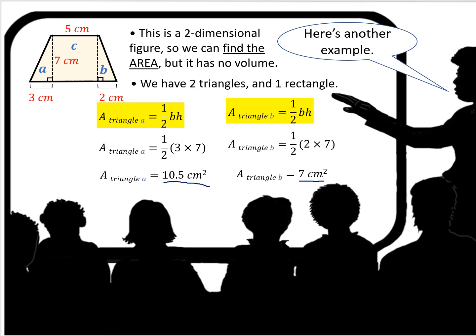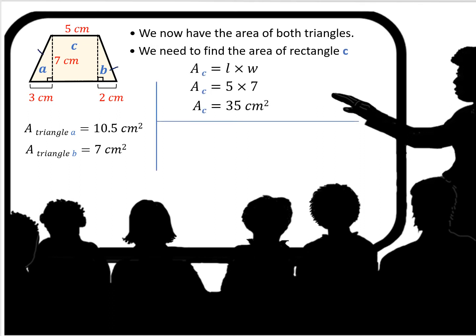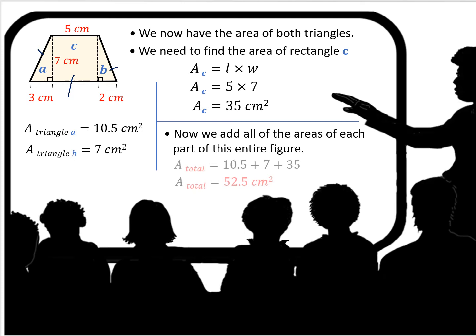That's only part of the area — we still have one piece of this figure left. We have the area of both triangles, but now we need to find the area of the rectangle. The area of a rectangle is length times width, so the area of rectangle C is 5 times 7, which is 35 centimeters squared. Now we add all the areas together and get a total area of 52.5 centimeters squared.